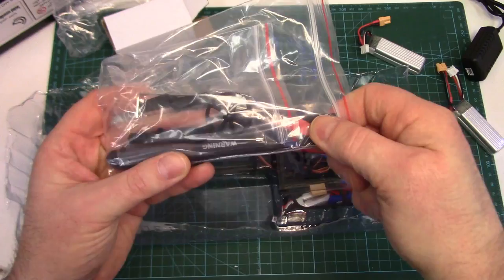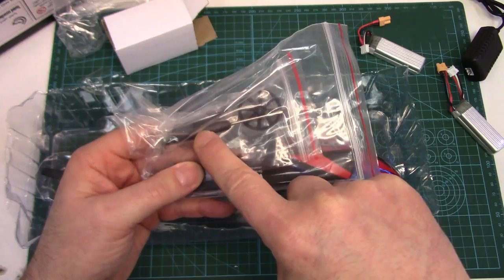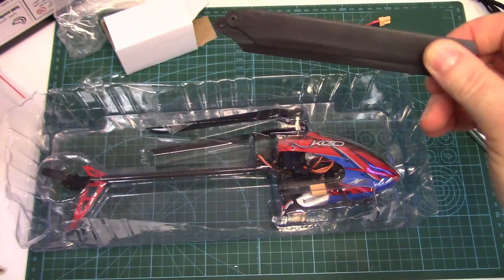As far as spares go, typical stuff we normally see with XK's Helis. We've got a spare set of rotor blades, spare main gear in case you either cam it out or strip some teeth off. Got a set of control links, one spare tail blade, 1.5 mm Allen key and a little Phillips screwdriver.